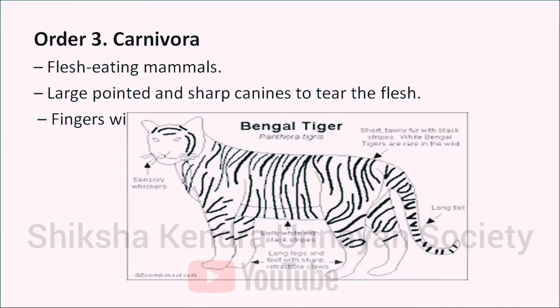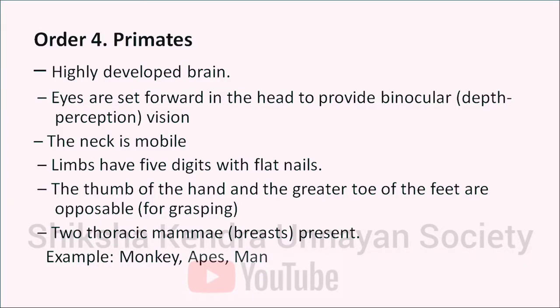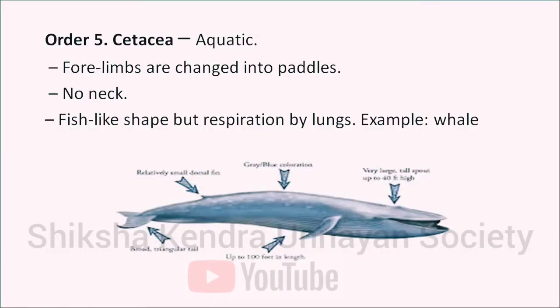The third order is Carnivora — flesh-eating mammals with large, pointed, sharp canines to tear flesh and sharp claws. Examples: lion, tiger, cat, dog. The fourth order is Primates, with highly developed brains. Eyes are set forward to provide binocular depth perception. The neck is mobile; limbs have five digits with flat nails; the thumb and great toe are opposable for grasping. Two thoracic mammae are present. Examples: monkeys, apes and humans. The fifth order is Cetacea — aquatic animals whose forelimbs are changed into paddles; they have no neck and a fish-like shape but respire by lungs. Example: whale.